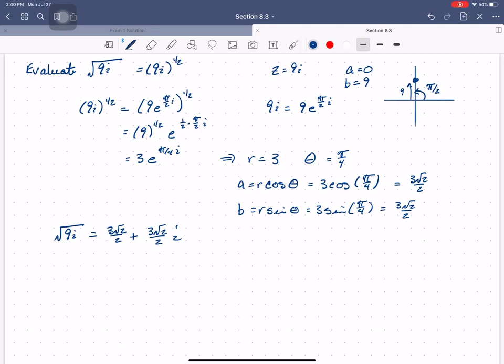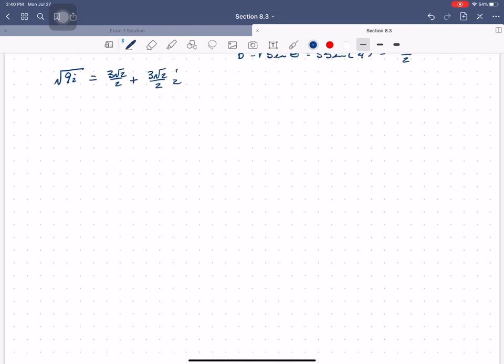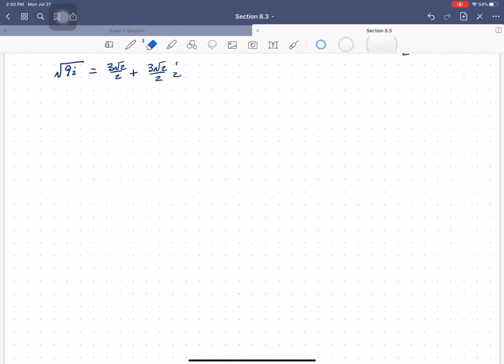So hopefully this has been helpful. I think this is fairly straightforward if you can wrap your brain around a couple of things. And those couple of things are that we can write complex numbers in a few different ways. So we can write them as z equals a plus bi, or we can write them as z equals r e to the i theta.